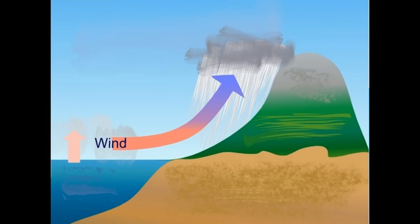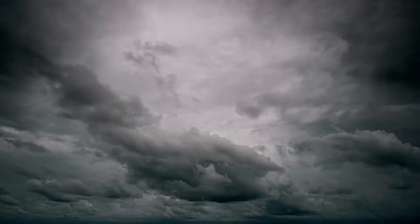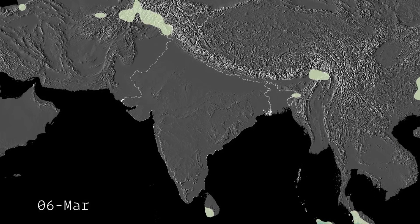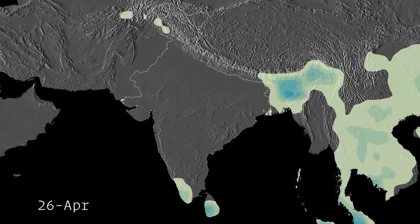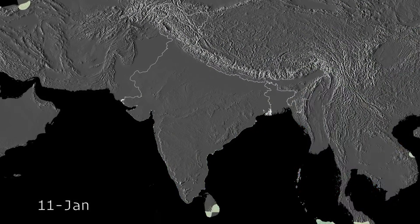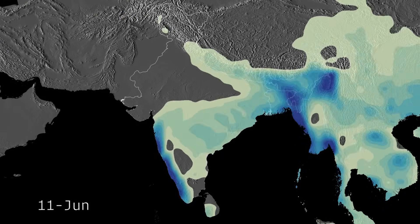This process is known as adiabatic cooling. As the rising air cools, the moisture it carries condenses rapidly, resulting in heavy rainfall. This is why many regions located along the southwestern coastlines and windward slopes — including parts of India, Bangladesh, Myanmar, Thailand, Laos, Vietnam, and southern China — receive intense seasonal rains during this time.